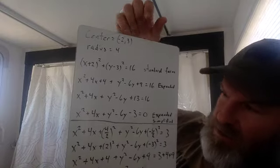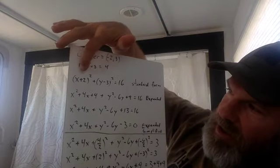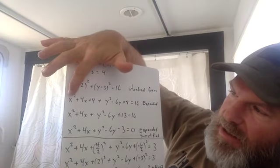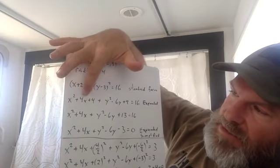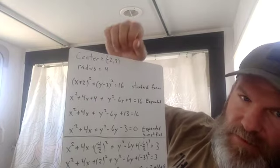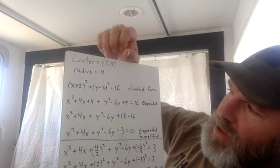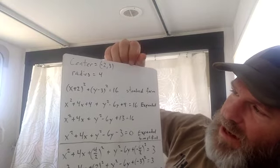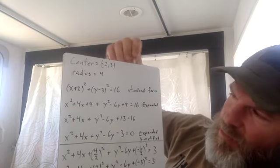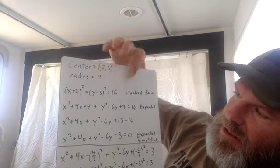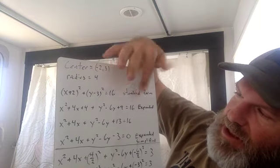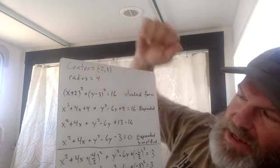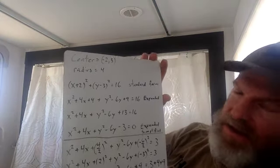So I expanded x plus two squared and got x squared plus four x plus four. Expand y minus three the same way and this is what you get. Note that it's plus nine, not minus nine.